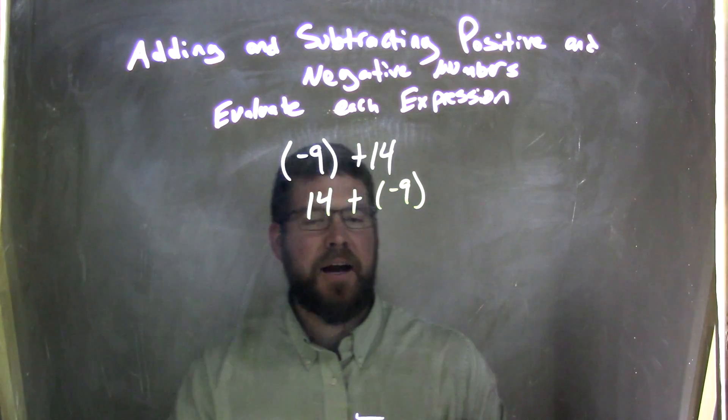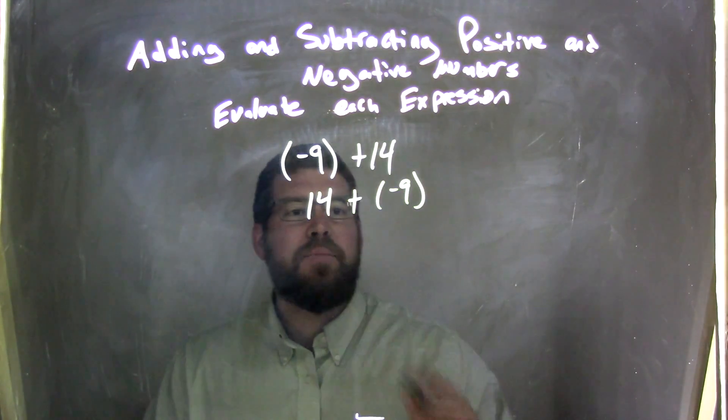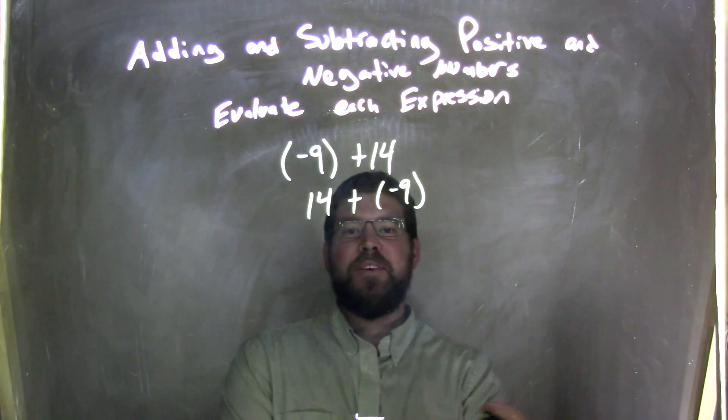So we can rearrange the 9 and the 14. But now by doing that, I have 14 plus a negative 9. Sometimes this is easier to see.